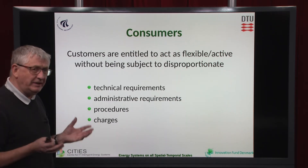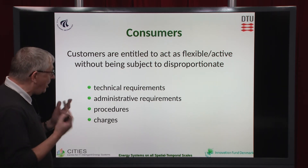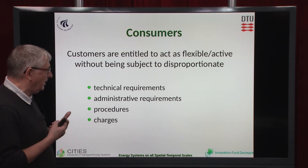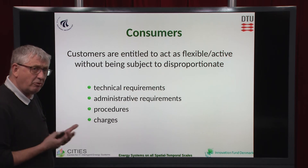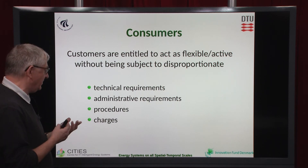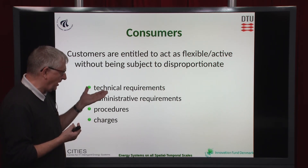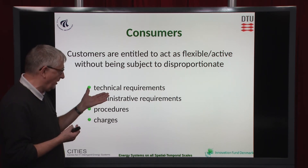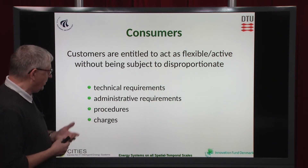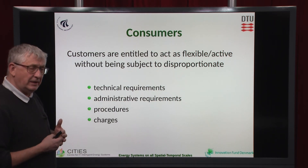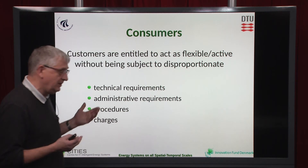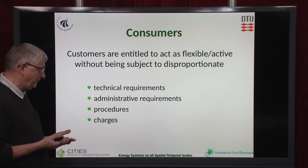One of the things we need to ensure is that the customers in the future energy systems are not being subject to requirements which are unreasonable. In many implementations, we see a lot of technical requirements on software which are put on the end-user side — on the washing machine, the electrical vehicle, and so on. We also see that in some cases they need to sign a contract with 30 pages in order to be able to deliver the flexibility which is needed.